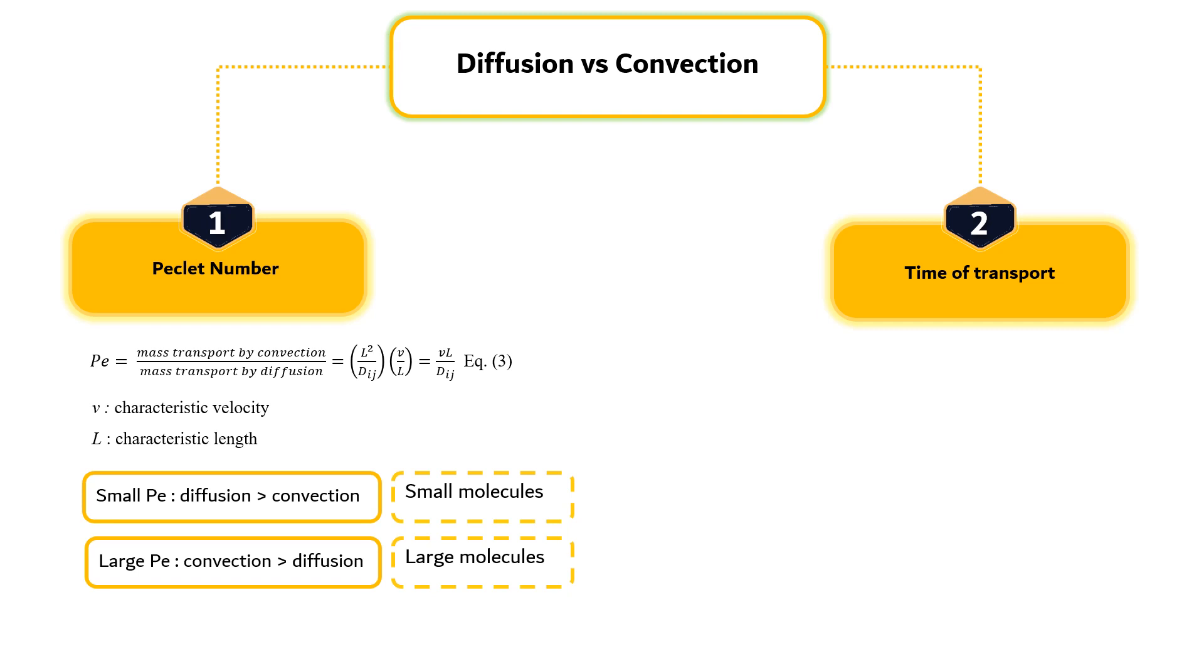The Peclet number is equivalent to computing the ratio of the diffusion time to the time for convection. The more efficient process is the one that takes less time.